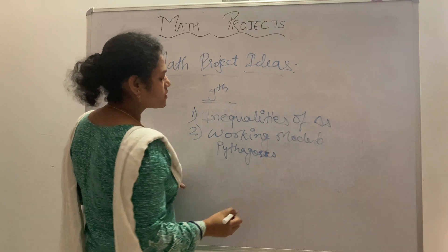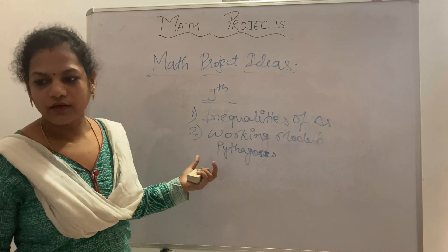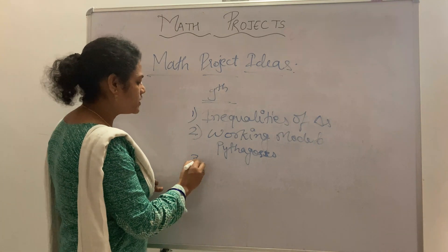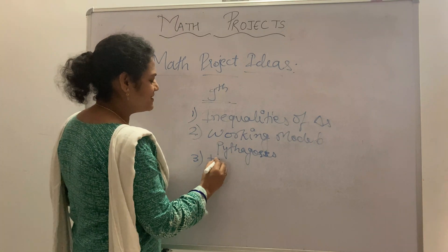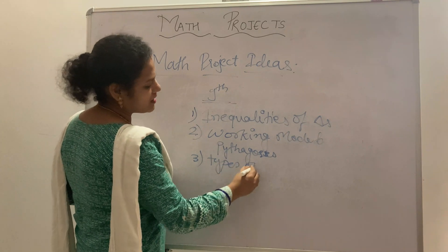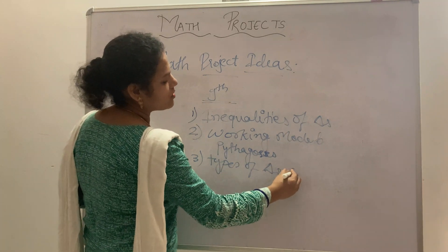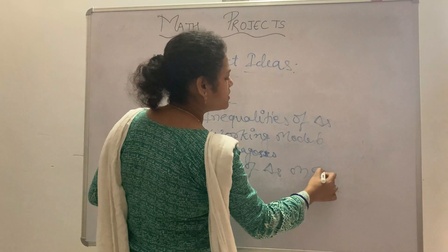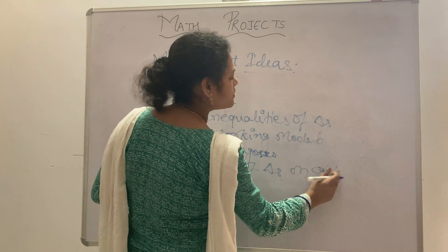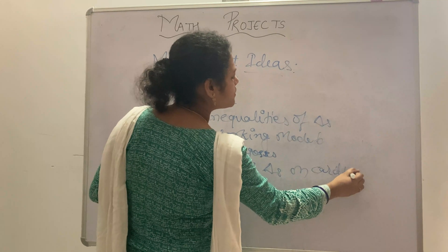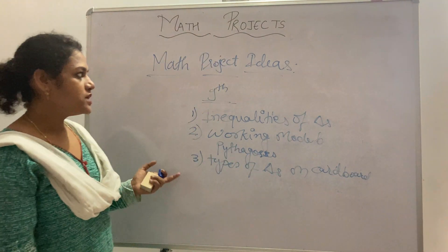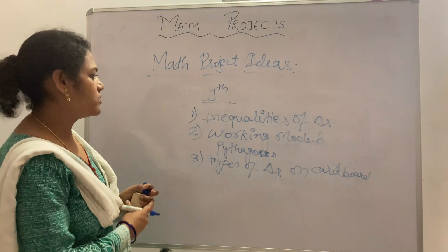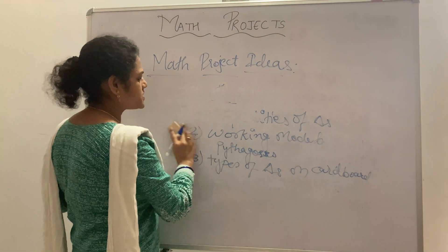You can also make a working model on Pythagoras theorem. Additionally, you can create different types of triangles on cardboard or any board using pins. These are the projects for Class 9.